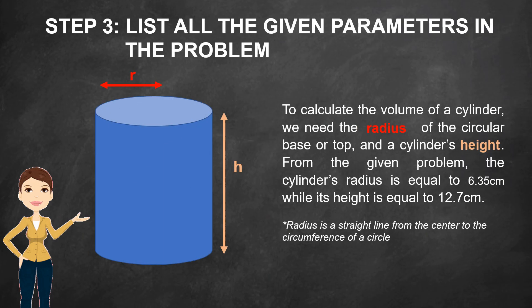Step 3: List all the given parameters in the problem. To calculate the volume of a cylinder, we need the radius of the circular base or top and the cylinder's height. From the given problem, the cylinder's radius is equal to 6.35 centimeters while its height is equal to 12.7 centimeters.